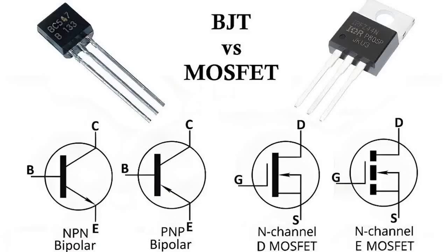BJT advantages include high gain and excellent linearity, better suited for small signal amplification, and lower cost for basic applications. MOSFET advantages include very high input impedance, extremely fast switching speed, higher efficiency and lower power losses, and smaller size, which is why they dominate in integrated circuits and processors.